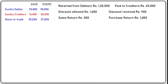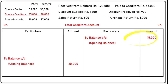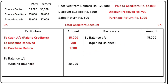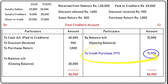Moving towards preparation of the creditors account: opening balance on the credit side, closing balance on the debit side. Paid to creditors is debited to the creditors account. Discount received and purchase return are also debited to the creditors account. After giving effect to all components, the total is 86,900. Subtracting the known debit side items (15,000), we get credit purchase = 71,900 on the credit side of the total creditors account.